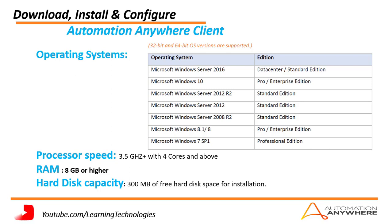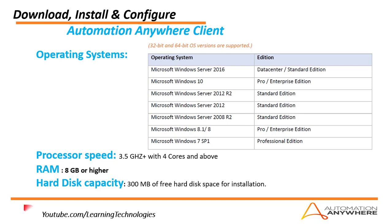You may not have the software right now to install all these things, but in a real-time scenario, the company will purchase it and install it. People may ask how they can practice. Automation Anywhere company itself is providing free trial versions, which I will show you after installation.